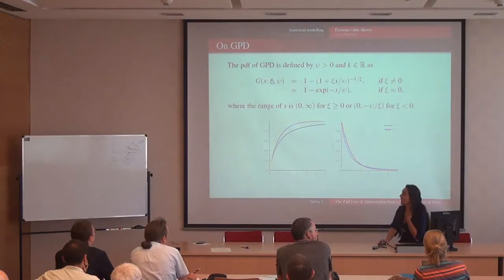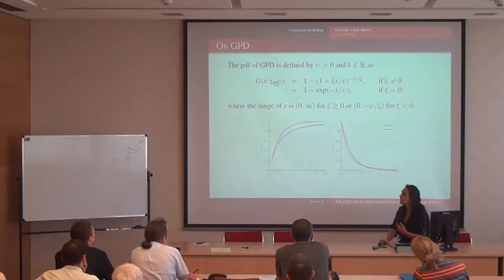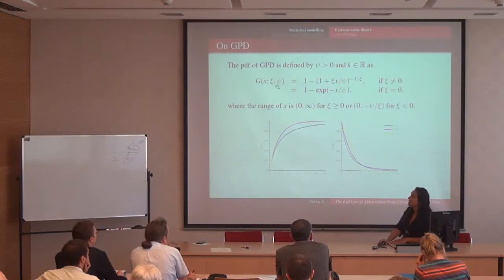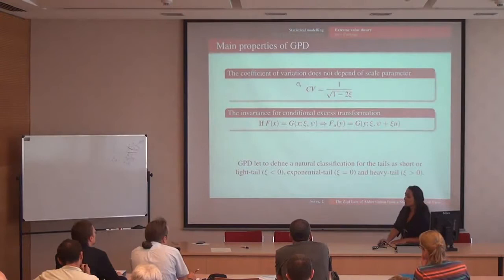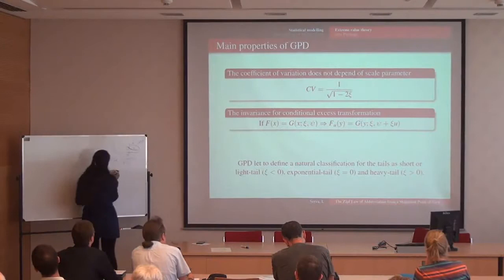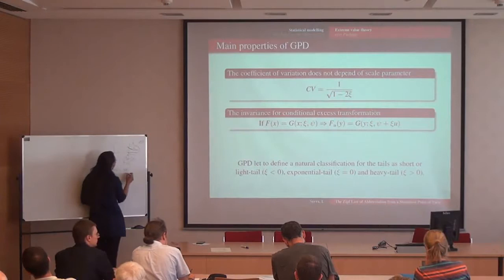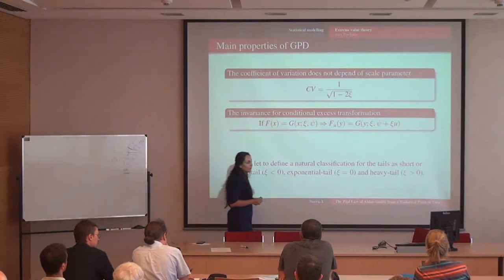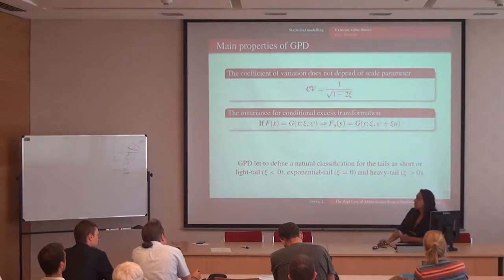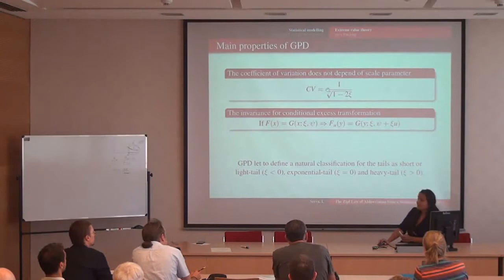The main property of GPD is the coefficient of variation — that is, the standard deviation divided by the mean. From a theoretical point of view, this is the square root of the variance divided by the expected value. This statistic only depends on one parameter: chi. That is a very important property and characterizes GPD. Another property is that when you have a GPD with two parameters, chi and sigma, and you translate to zero repeatedly, you get again a GPD — the chi is the same but sigma changes depending on where you put the threshold.